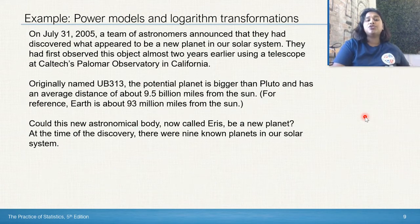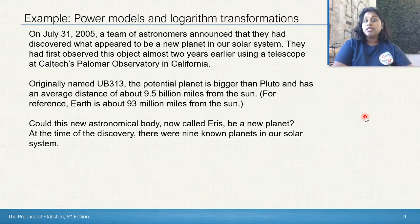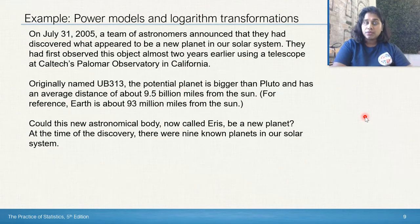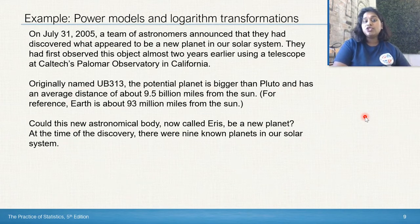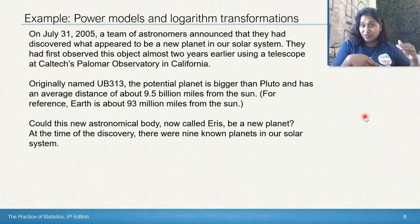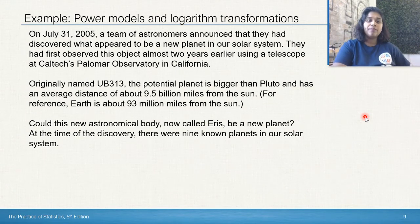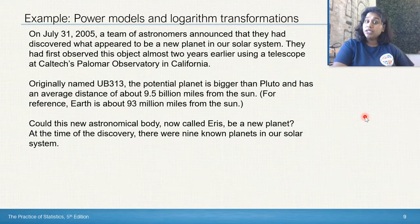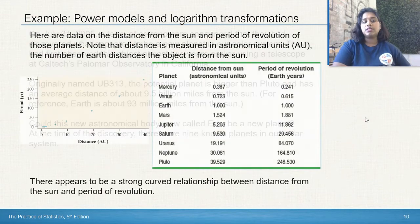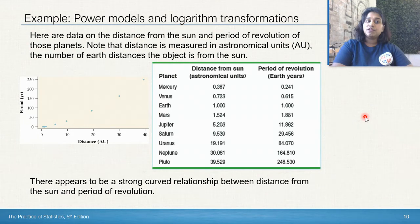On July 31, 2005, a team of astronomers announced that they had discovered what appeared to be a new planet in our solar system. They had first observed this object almost two years earlier using a telescope at Caltech's Palomar Observatory in California. Originally named UB 313, the potential planet is bigger than Pluto and has an average distance of about 9.5 billion miles from the sun. For reference, Earth is only about 93 million miles from the sun. And if you want to see me in tutoring about the difference between millions and billions, it is a massively different number. Could this new astronomical body, now called Eris, be a new planet? At the time of discovery, there were nine known planets in our solar systems. A lot of you know that after 2005, they deleted Pluto as a planet. But at that time, there were nine known systems.